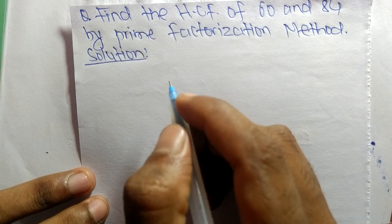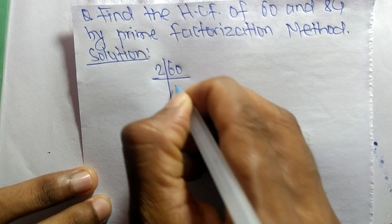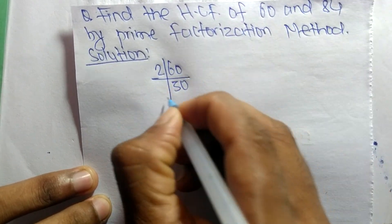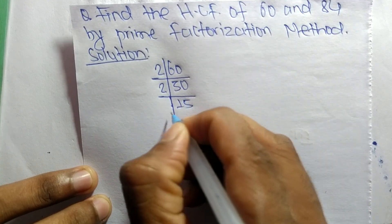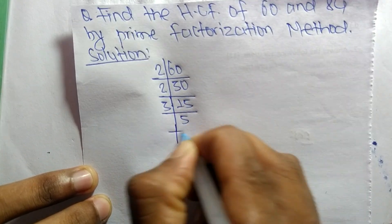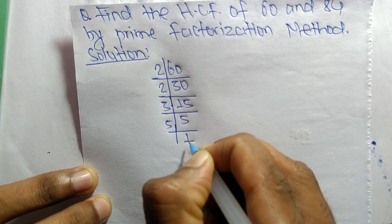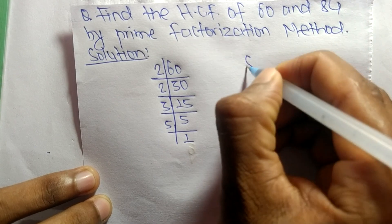First, we find out the prime factors of 60. So it is 2 times 30 equals 60, 2 times 15 equals 30, 3 times 5 equals 15, and 5 times 1 equals 5. These are the prime factors.